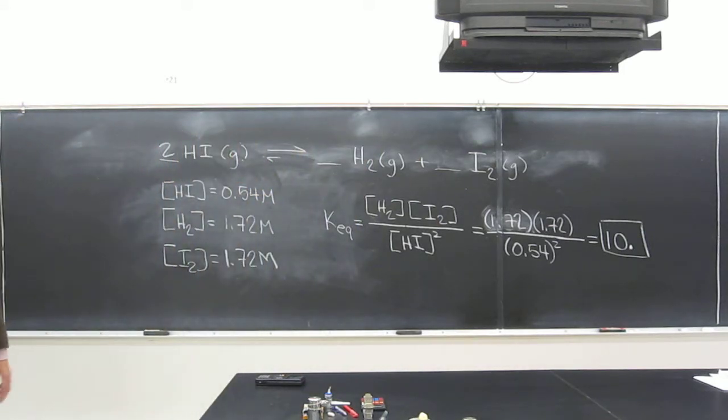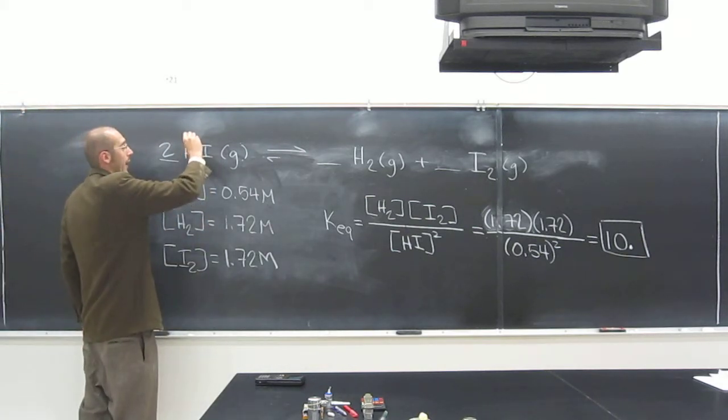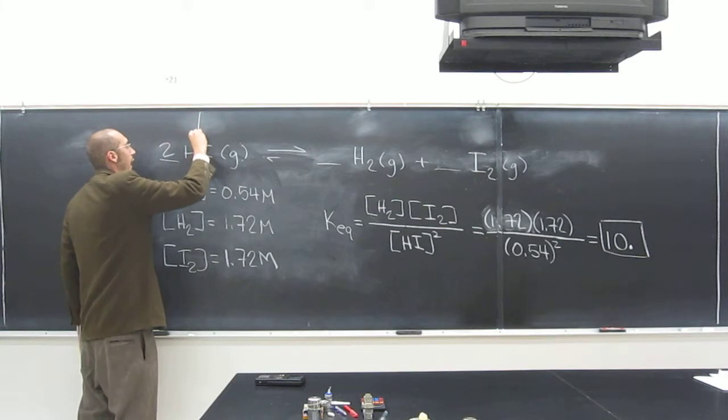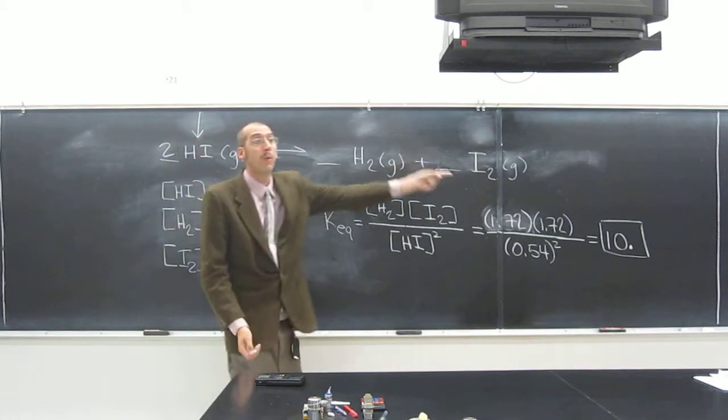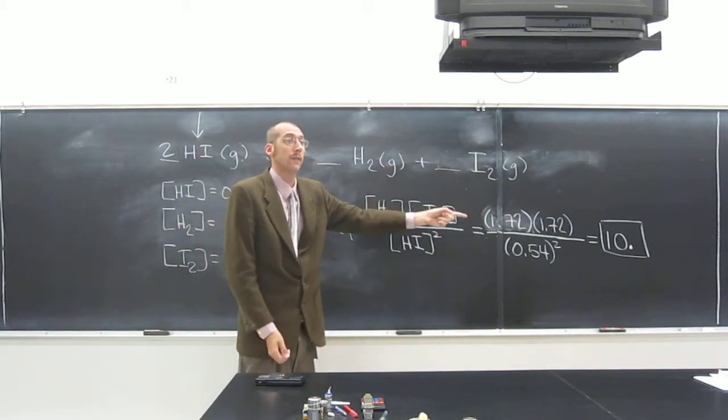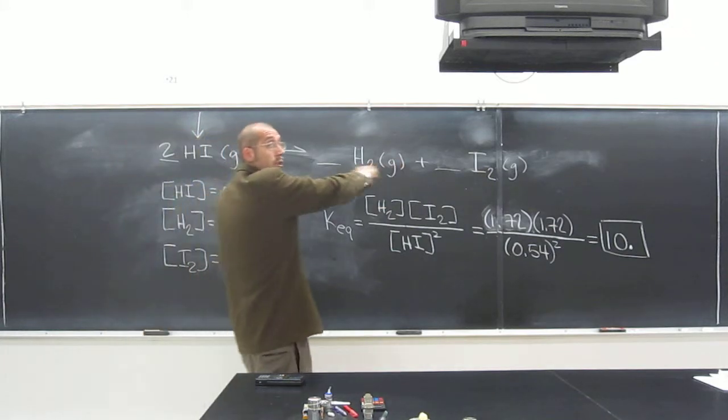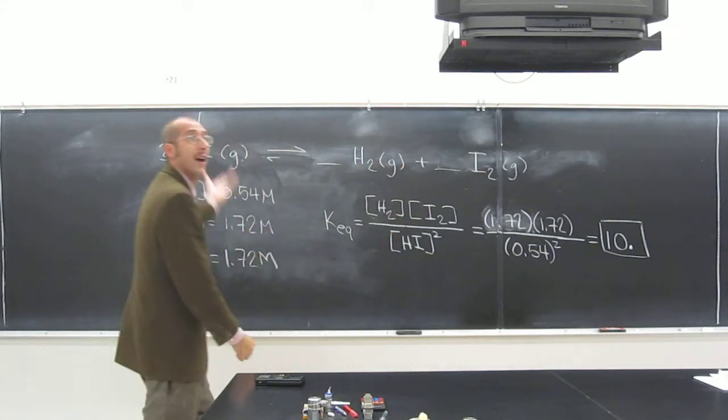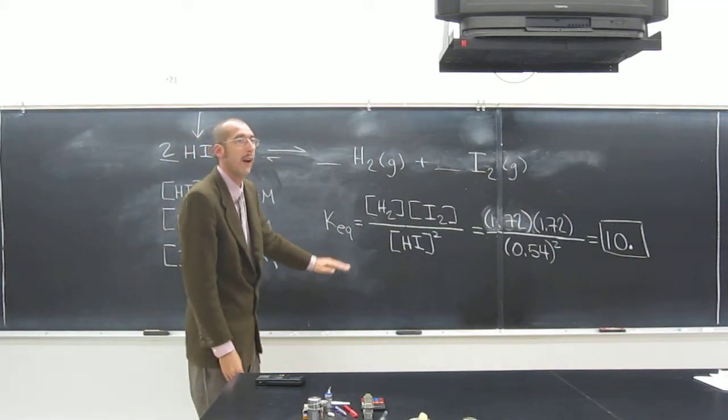Anyways, what Le Chatelier figured out was that if you add something or take something away, you can push the reaction back or forth. So in other words, if you were in this case to add HI, you increase the concentration of reactants, that will push the reaction that way. That's because the reaction feels that there's too much of this and it wants to react, it's got too high of a concentration. The equilibrium constant is not met, is what's happening.